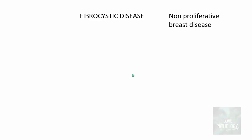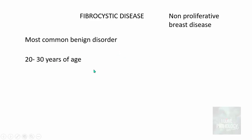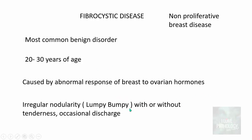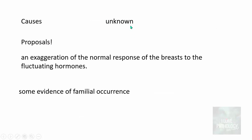Today, let us understand fibrocystic disease. This is a non-proliferative breast disease — the most common benign disorder, usually occurring around 20 to 30 years of age, caused by an abnormal response of the breast to ovarian hormones. These individuals present with irregular nodularity — what we call a lumpy-bumpy breast — with or without tenderness. The patient may present with pain, tenderness, and occasionally nipple discharge. Importantly, there is absolutely no risk of malignancy in fibrocystic disease. The causes are usually not fully known, but proposals include an exaggeration of normal breast response to fluctuating hormones and a genetic component given evidence of familial occurrence.